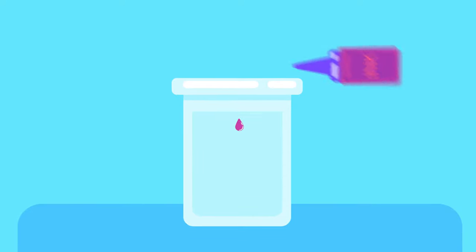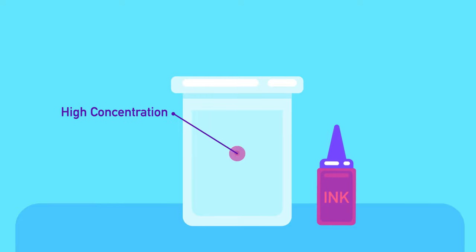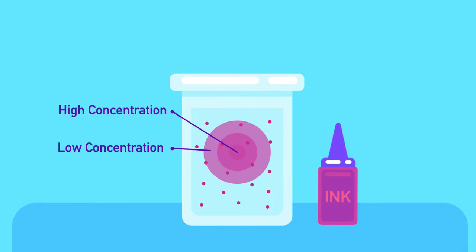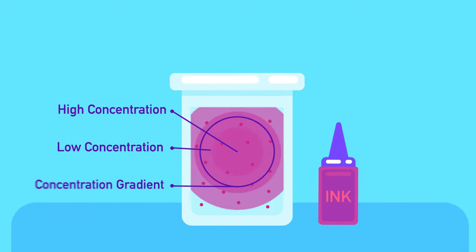Diffusion occurs when particles, gases, or dissolved substances are mobile or free to move as they spread from where they are in high concentration to the region where they are in low concentration, throughout the concentration gradient. The concentration gradient is an environment in which particles are distributed in different concentrations, keeping high concentration on one side and low concentration on the other.